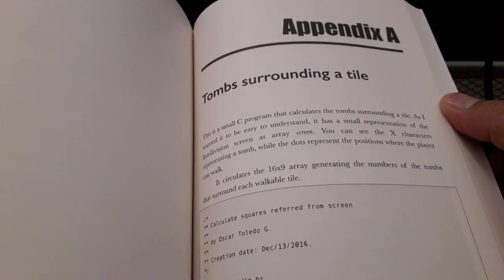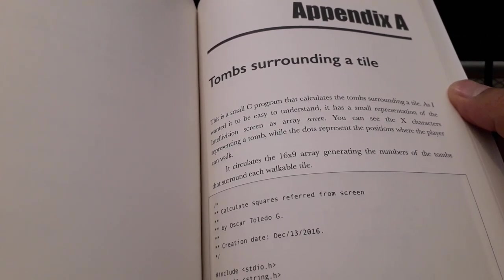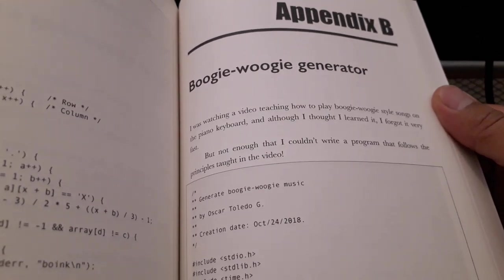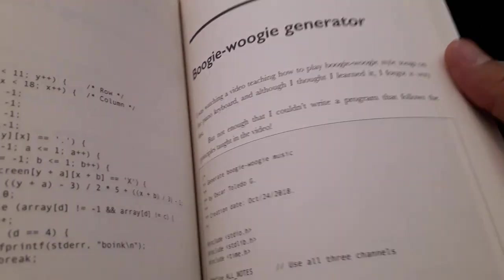Utilities used during the development of the games. Generation of boogie woogie songs, this is automatic.